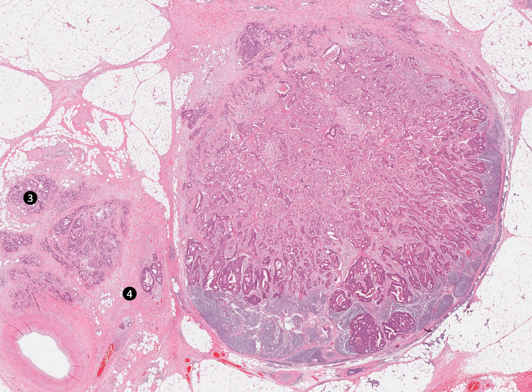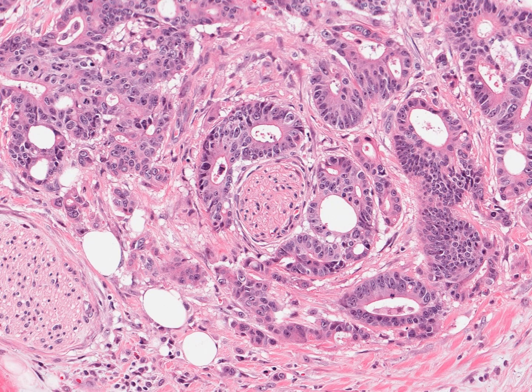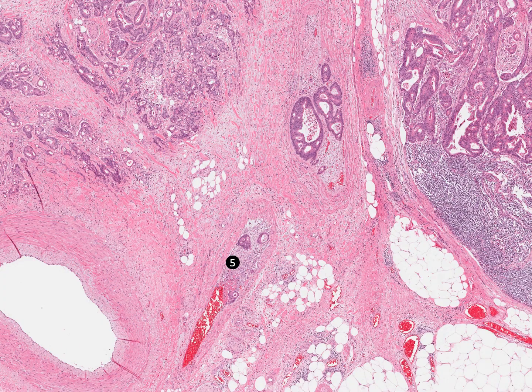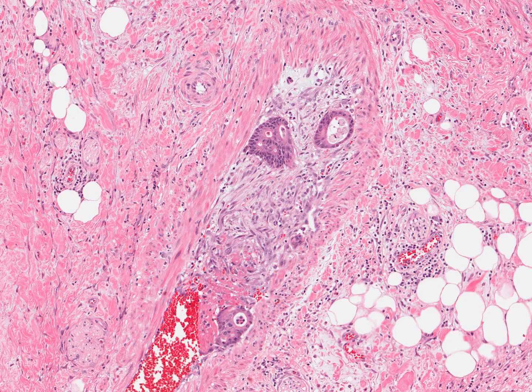At the far left there is a focus of perineural involvement by tumor. Below this focus is extramural venous involvement. About half of the venous lumen is occluded by tumor and accompanying desmoplastic stroma.